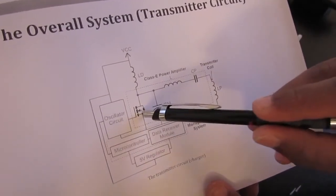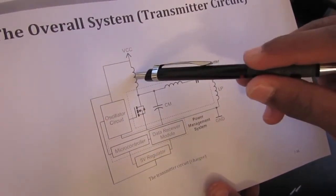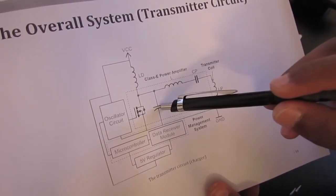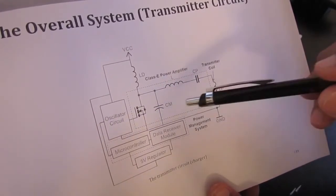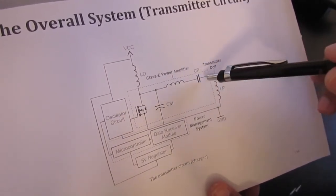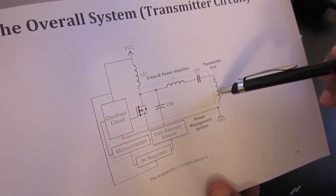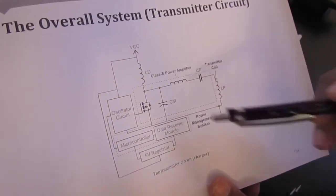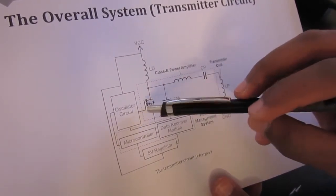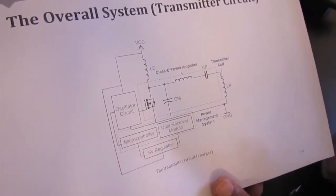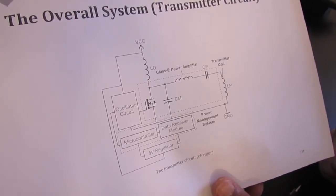The Class E amplifier consists of one MOSFET, a choke inductor, a capacitor between the drain and source, an inductor-capacitor tuning circuit, and the transmitter coils. The MOSFET is being driven by voltage-controlled oscillators.